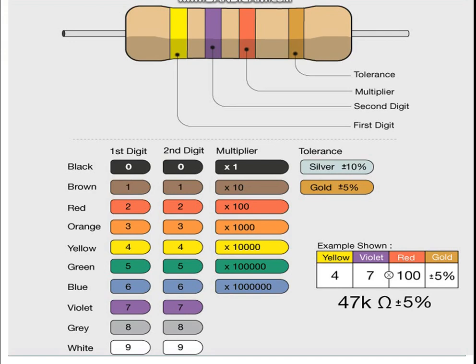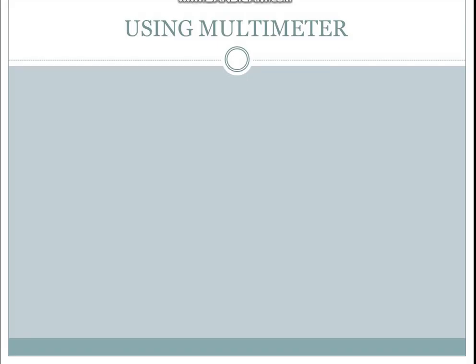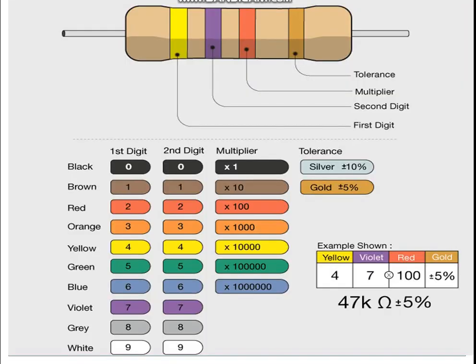Here the first band is yellow — its value is four. The second band is violet — its value is seven. The third band, the multiplier, is red — red means ×100. So totally we get 47 × 100 = 4700 ohms, that is 47 kilohms. The last band is gold — tolerance is ±5%. So that is 47 kilohms ±5%.